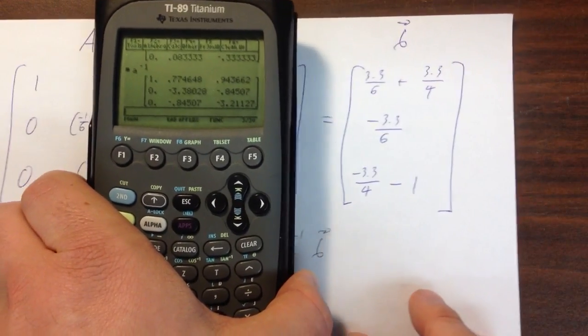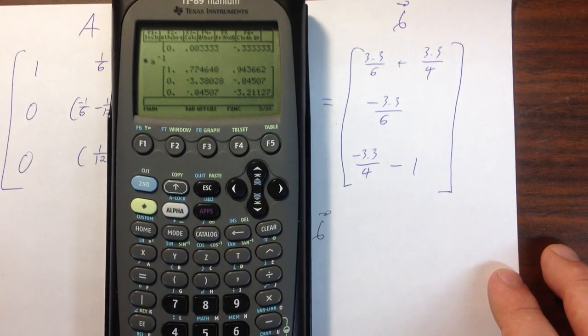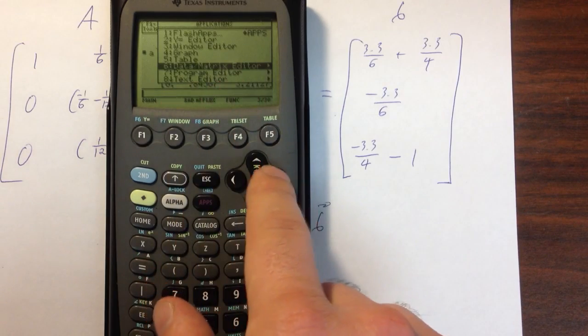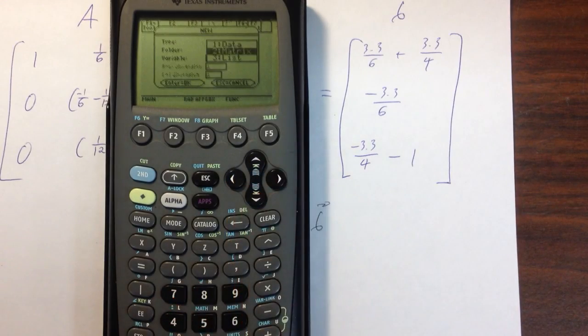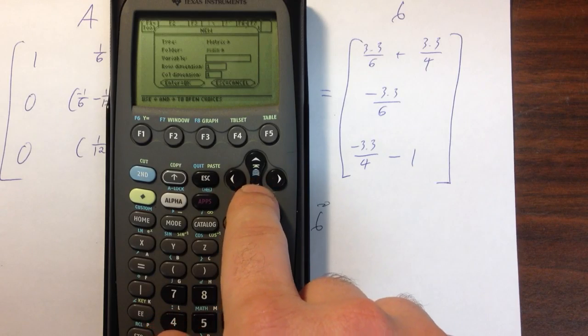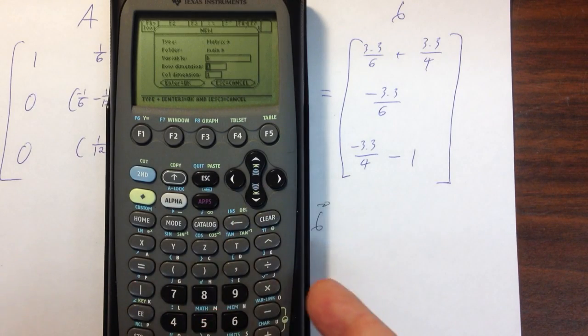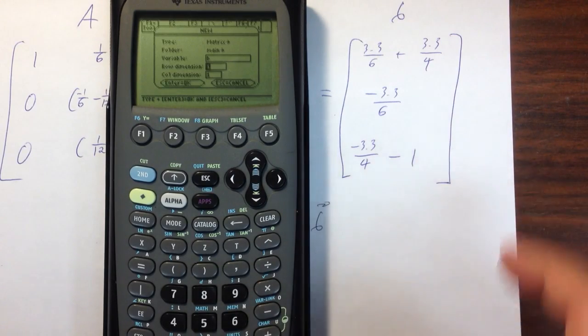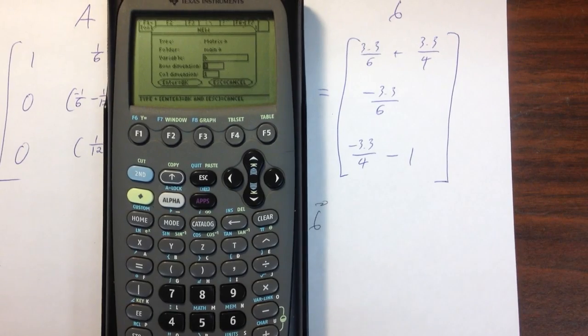The next thing I have to do is I have to get my B matrix into the calculator. We're going to do the exact same thing that we did with the A matrix. I'm going to push the apps button. I'm going to go down to option number 6, data matrix editor. I'm going to get a new variable, push enter. I want it to be a matrix. It goes into the main folder. For the variable name, this is going to be variable B. Remember the alpha lock is still on here. I have to hit alpha if I want to put in numbers. B is a 3 by 1 matrix. My row dimension is 3 and my column dimension stays 1. I can push enter twice.